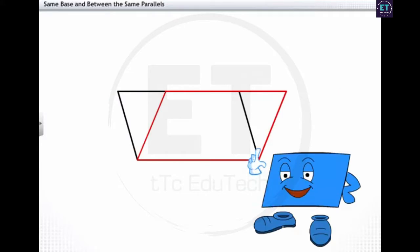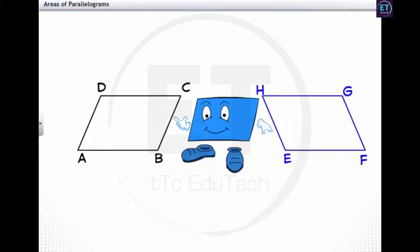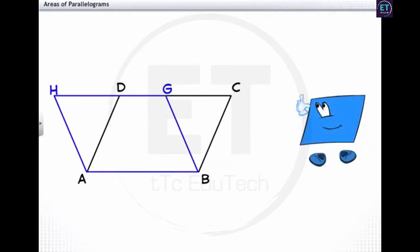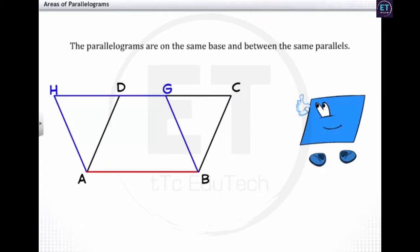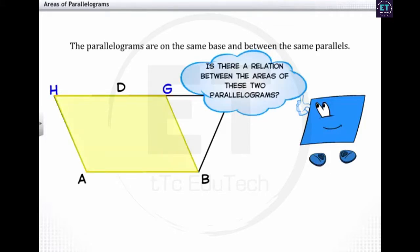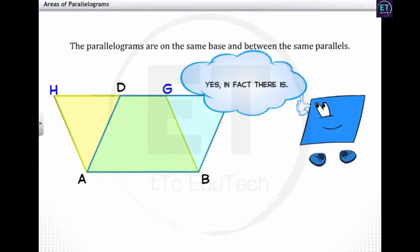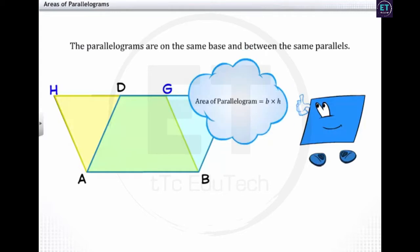Next we'll discuss parallelograms that are on the same base and between the same parallels. Here are two parallelograms ABCD and EFGH. After rearranging, the parallelograms are now on the same base AB and between the same parallels AB and CH. Do you think there is a relation between the areas of these parallelograms? Yes, in fact there is — let's try to find it.